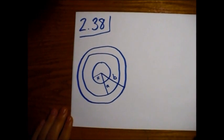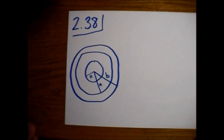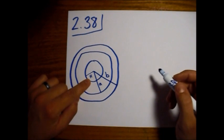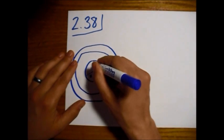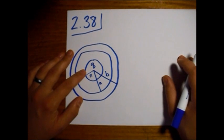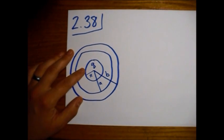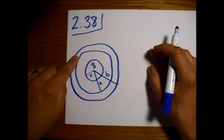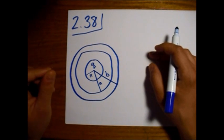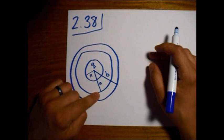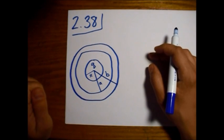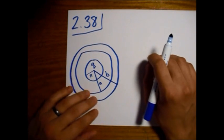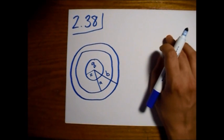This is Griffith's Electrodynamics, problem 2.38. We have a metal sphere of radius big R carrying a charge little Q. It's surrounded by a spherical shell with an inner radius of A and an outer radius of B, and this shell is net neutral — it carries no net charge.